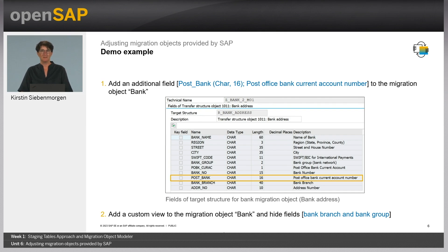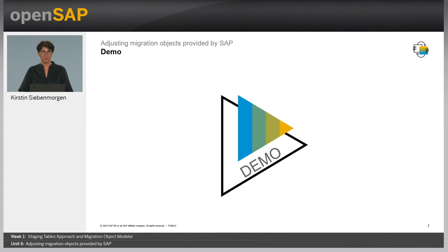In our demo, I will add the field Post Office Bank current account number, which is currently not part of the standard content, to my Migration Object as I want to fill this field with data in my example. You can see that this field is available in the target structure Bank address. In addition, I will add a custom view to the Bank Migration Object and hide fields Bank Branch and Bank Group as I do not need to fill these fields with data. Let's switch to the demo.